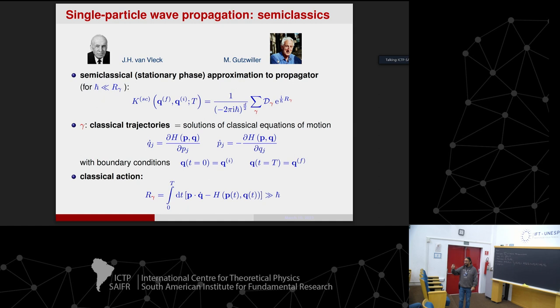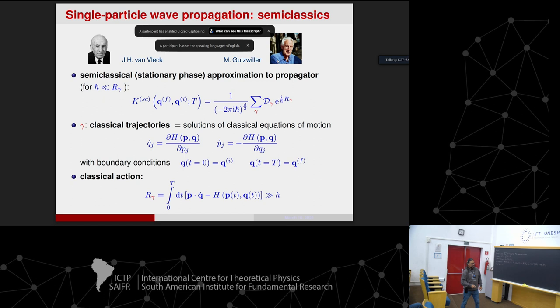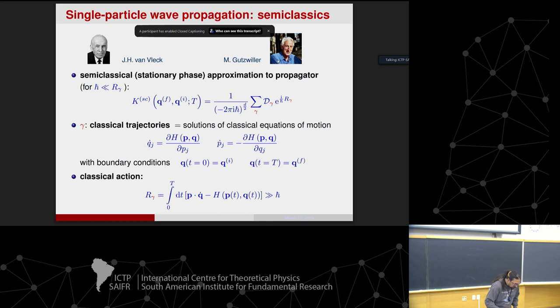Van Vleck proposed a form of the semi-classical propagator but without the sum over classical solutions — it only accounted for the shortest classical solution. Gutzwiller, in the 1960s, decided to rethink the problem from a different point of view. Van Vleck didn't have any trace formula or anything like that.